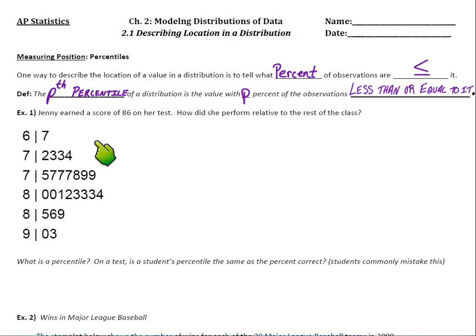So the p-th percentile could be the 20th percentile, the 80th percentile, the 95th percentile, whatever that value for p may be. It's got that percentage of the observations less than or equal to it. So let's look at the first example here. It says Jenny earned a score of 86 on her test. How did she perform relative to the rest of the class? And we have the entire class distribution of scores here in a stem and leaf plot. So for starters, let's point to Jenny. Let's pick her out of the group here. She scored an 86, so that must be her score right there.